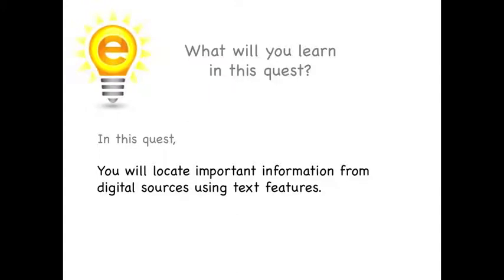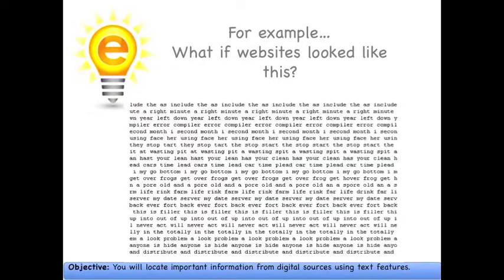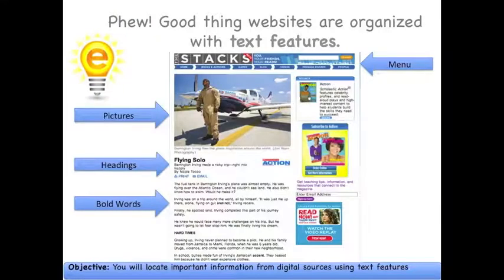Welcome to your quest. In this quest, you will locate important information from digital sources using text features. For example, what if a website looks like this? A big jumbled mess of text. It would be so difficult to find what you're looking for. Luckily, websites look more like this because authors use things called text features to help organize information.